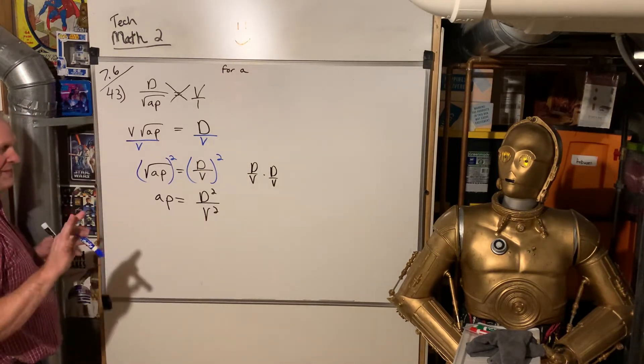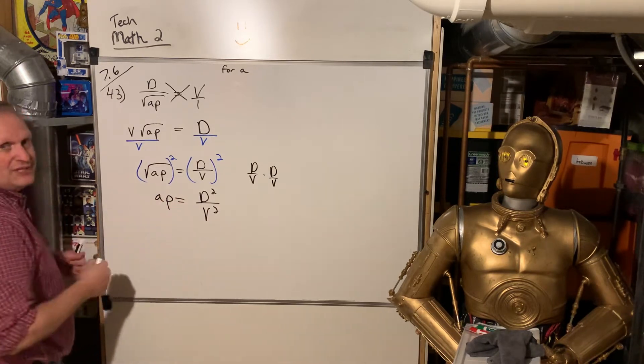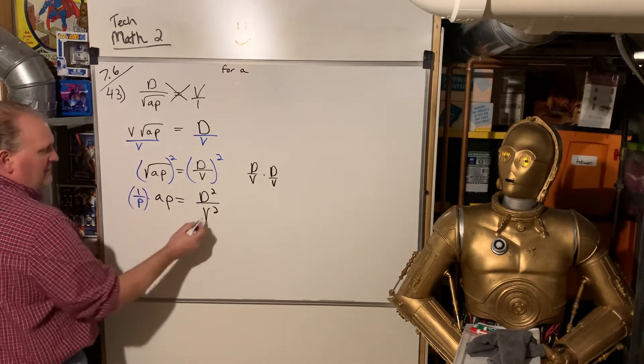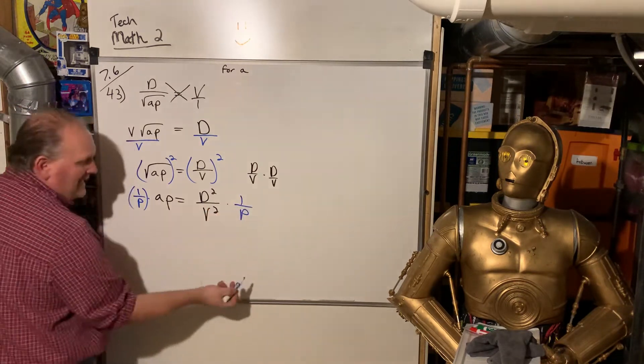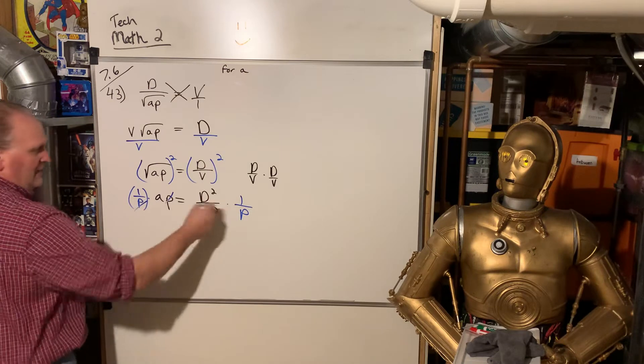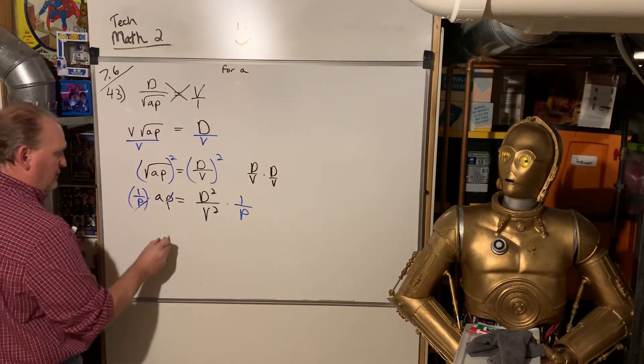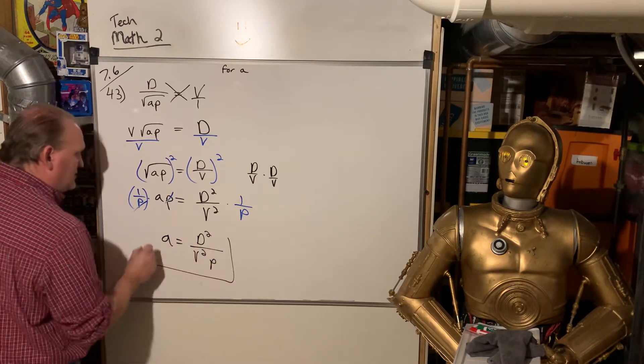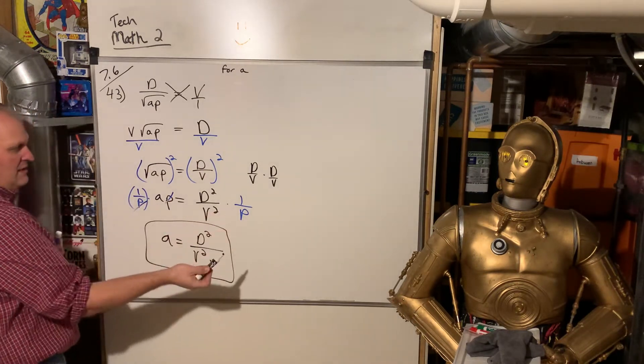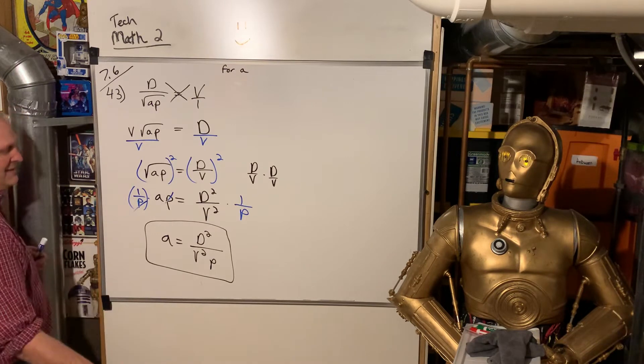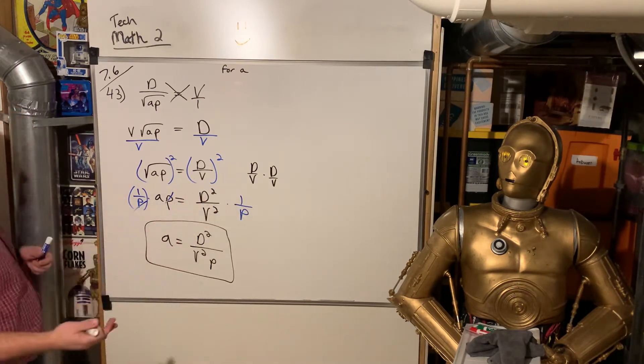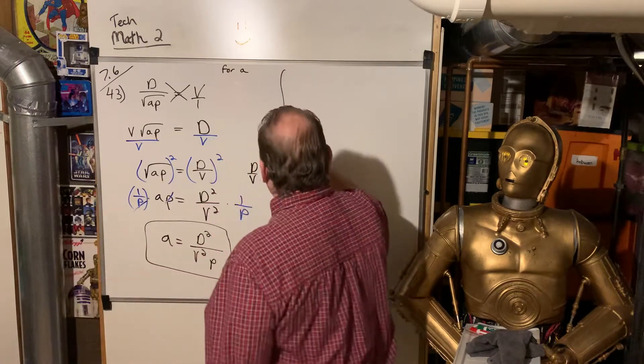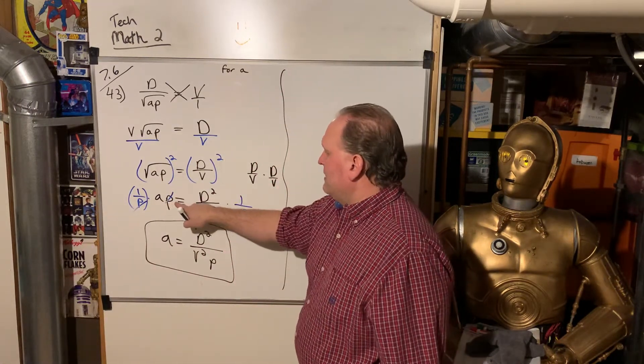And now, this is a little tricky. We could divide both sides by P. But what that's going to do is just put a P down here, V squared P. Another way of looking at it, which might be a little easier. When you have this, instead of dividing both sides by P, when you've got a fraction on the right side here, multiply it by 1 over P. It's the same thing. Multiplying by 1 over P is the same as dividing both sides by P. But here, it makes a little more sense to look at it in this form.